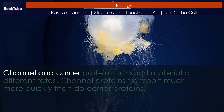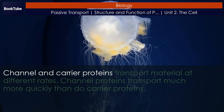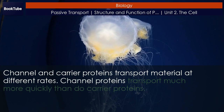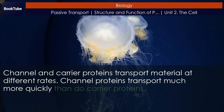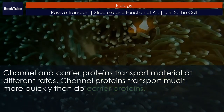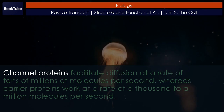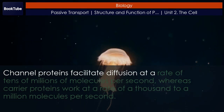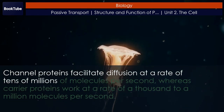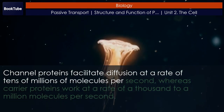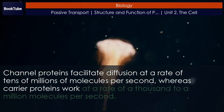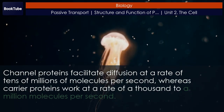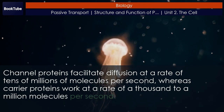Channel and carrier proteins transport material at different rates. Channel proteins transport much more quickly than do carrier proteins. Channel proteins facilitate diffusion at a rate of tens of millions of molecules per second, whereas carrier proteins work at a rate of a thousand to a million molecules per second.